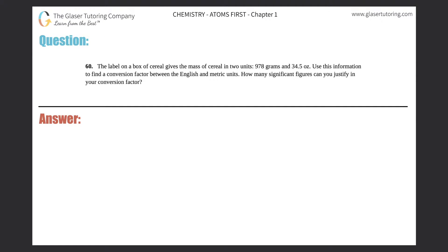Number 60: The label on a box of cereal gives the mass of cereal in two units - 978 grams and 34.5 ounces. Use this information to find a conversion factor between the English and metric units, and how many significant figures can you justify in your conversion factor?